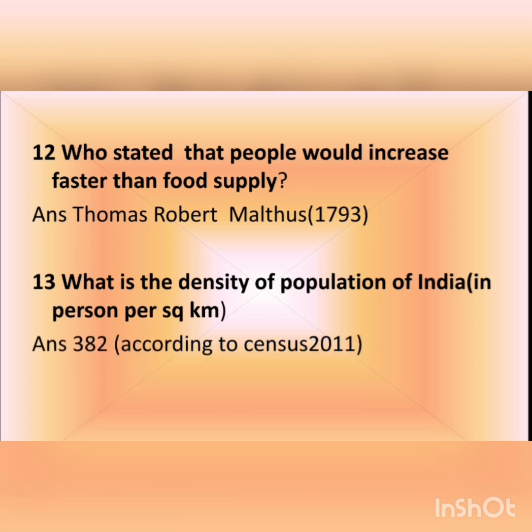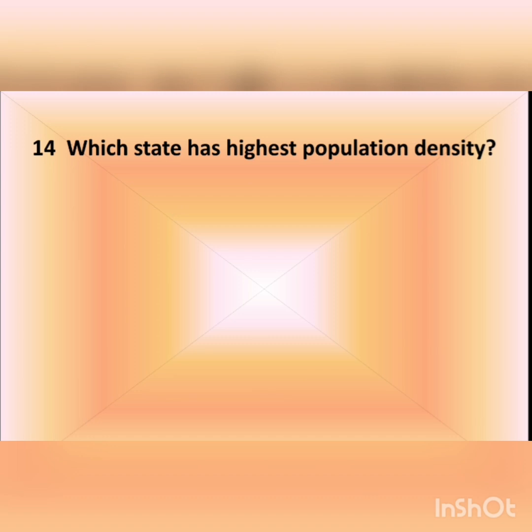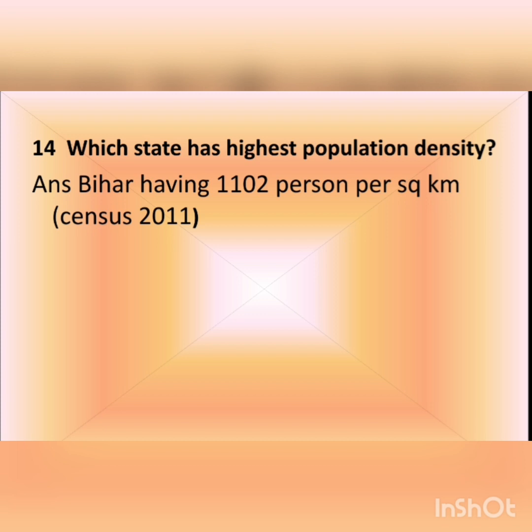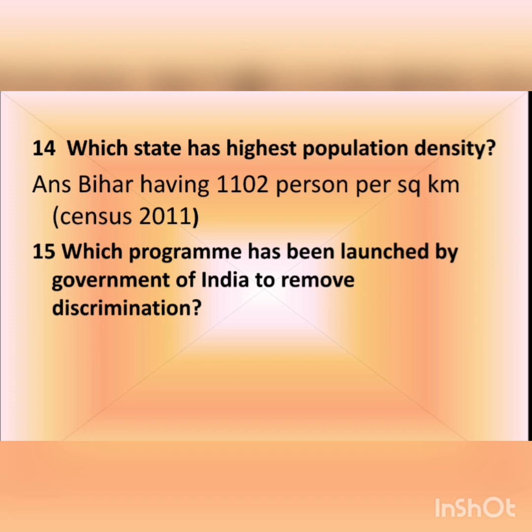The thirteenth question is: what is the density of population of India in persons per square kilometer? The answer is 382 persons per square kilometer according to the census 2011. The fourteenth question is: which state has the highest population density in India? The answer is Bihar, having 1102 persons per square kilometer, also according to census 2011.